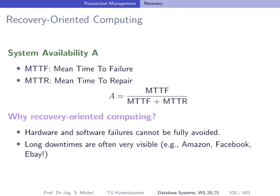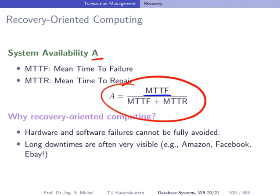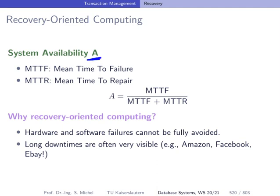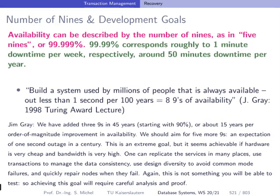Why do we look at recovery in so much detail? Consider the formula defining system availability A, which is defined as mean time to failure divided by mean time to failure plus mean time to repair or recovery. Hardware and software failures cannot be fully avoided, and downtimes are very visible for big players like Amazon and Facebook, but also for your local bank. Availability should be very high, and is often described by the number of nines — for instance, 99.999% availability means five nines.